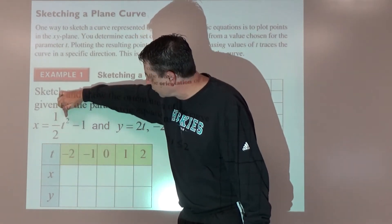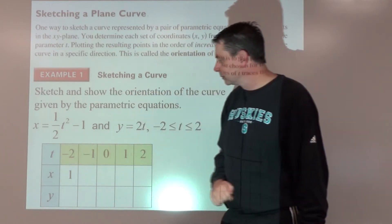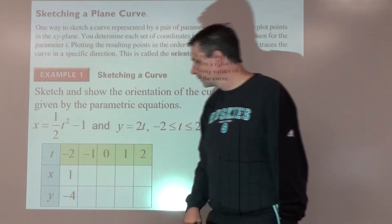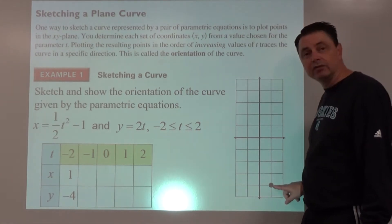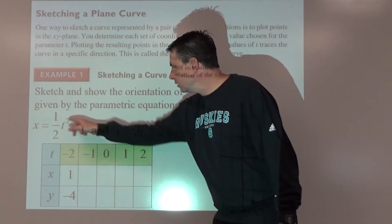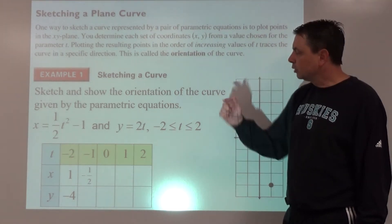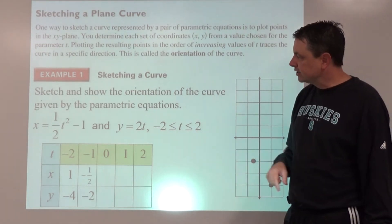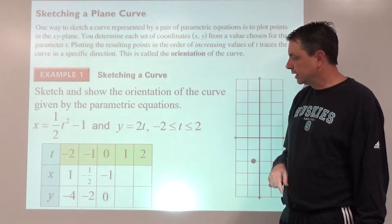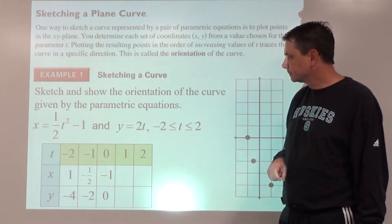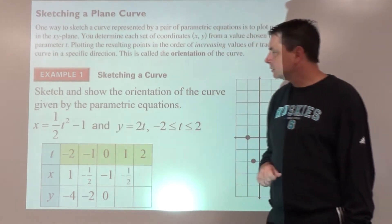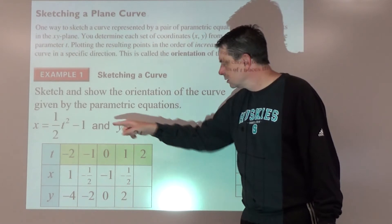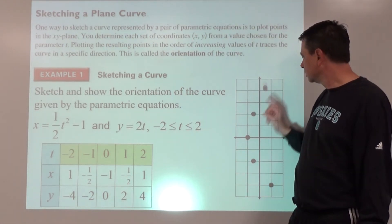Now x is defined in terms of t, so if we plug in -2 for t here, square that, take a half minus one, we're going to get x is 1. If we do the same thing for y, y is 2 times the t, so we have a point at (1, -4). Plug in -1, you get -½ for x, plug it into y, you get -2. Plug in 0: (-1, 0). One for t, get another (-½, 2), and plug in 2, we get (1, 4).